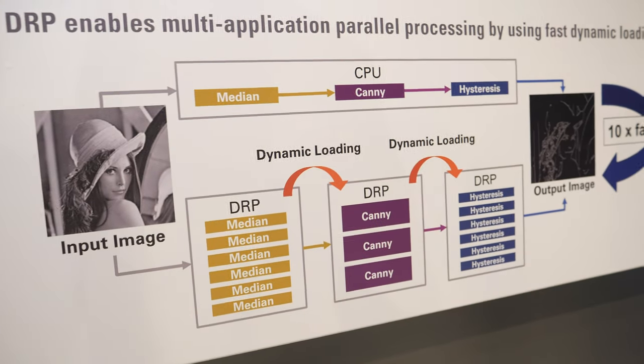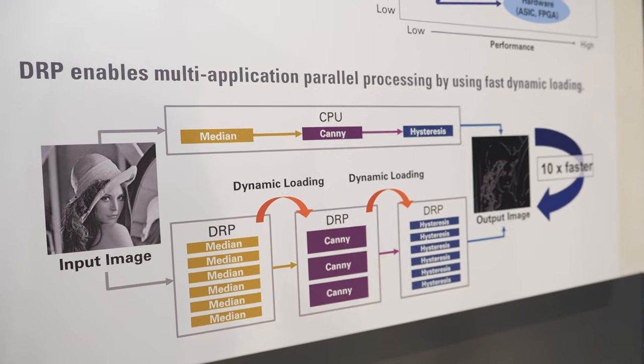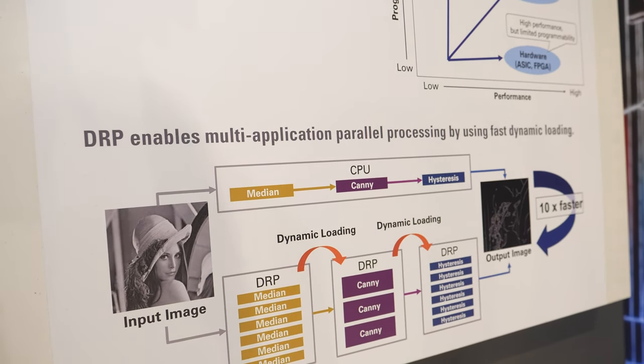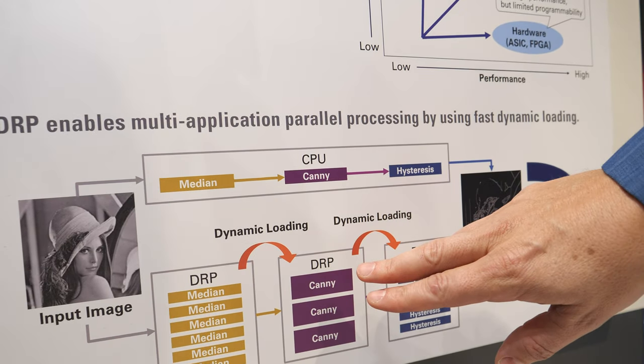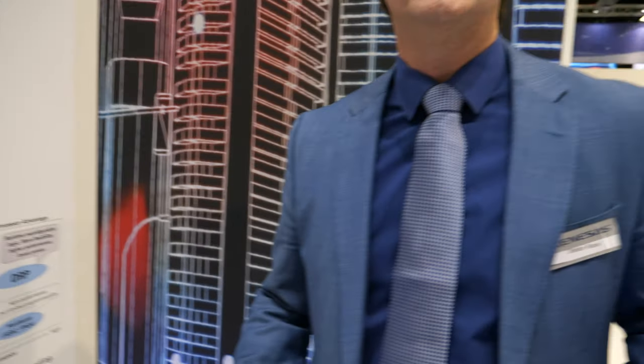You can use the DRP in EAI nodes to do image preprocessing. In this version of the DRP, we have six tiles that work like a GPU — you can do parallel processing on image data. You can have six tiles working on a median filter, six tiles working on Canny, six tiles working on hysteresis. Each of these functions runs 20, 30, 40 times faster on the DRP tiles compared to software on the CPU. You can also reload very, very fast, giving you powerful image preprocessing functionality.